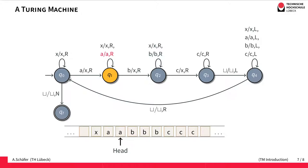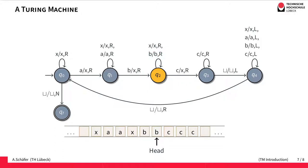We continue moving right through the A's, staying in Q1. When we encounter a B, we take the transition that leads to state Q2 and replaces the B with an X. In Q2, we encounter more B's — the transitions keep the B unchanged and move the head to the right, staying in Q2. Eventually the head reaches a C, so we take the transition to state Q3, replace the C with an X, and continue to the right. In Q3, we verify that only C's remain to the right, moving right until the head lands on a blank.